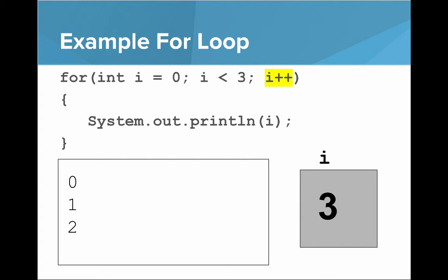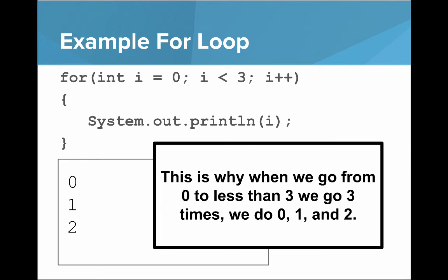So i is now 3 and then we ask is 3 less than 3 and the answer there is false. So now we're done with our loop. And so this is why when we go from 0 to less than 3 we go 3 times, we do it for 0, for 1 and for 2, and so that's really the breakdown of what our for loops in Karel were doing.